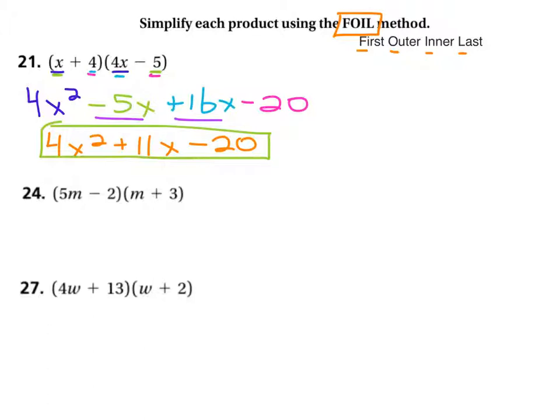Another way you'll see it is like this. You'll see it as like the first term in each. First times first, like that. 5m squared. The outer terms, that times that. 5m times 3, 15m.